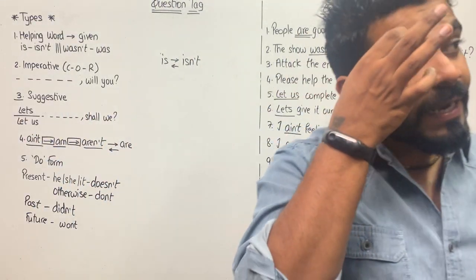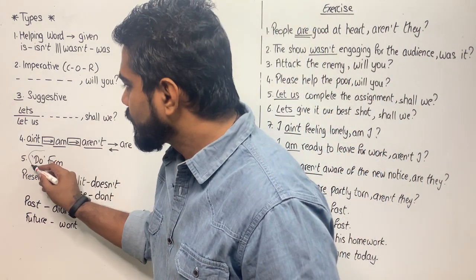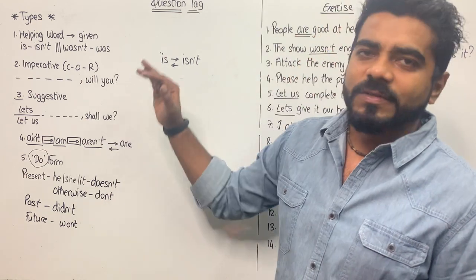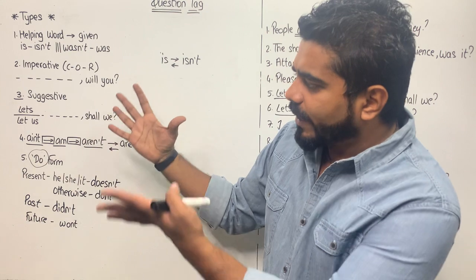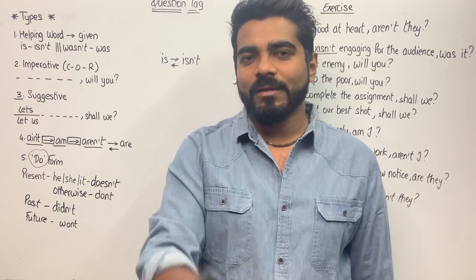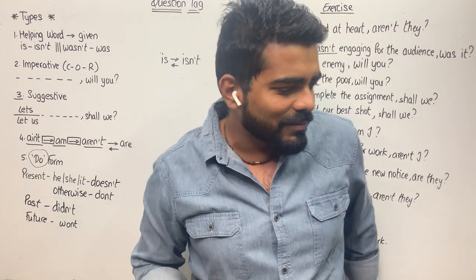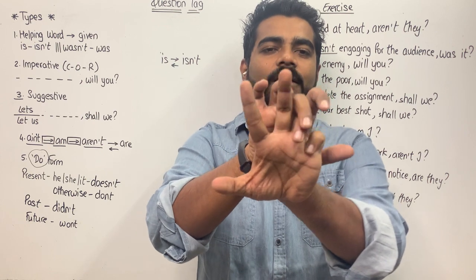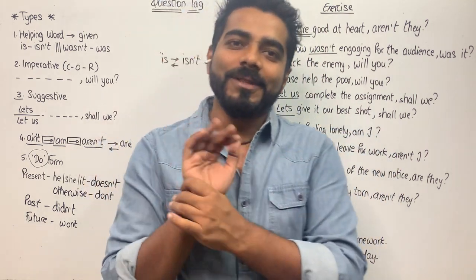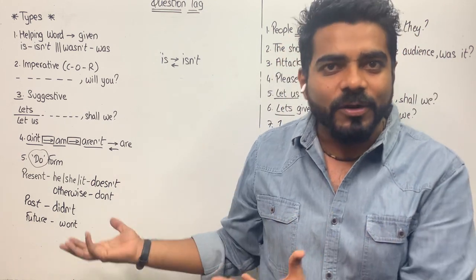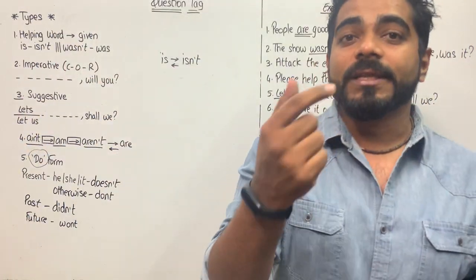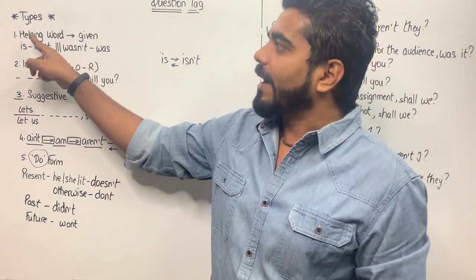Now the fifth type — that is, do form. When does a sentence land in the fifth type? When it does not come in the first four types, it comes in the fifth type. On a serious note: if the sentence does not have a helping word like is, was, could, would, should, are, etc., it is not imperative (not a command, order, or request), it does not begin with 'let's' or 'let us', and it does not have ain't, am, aren't, or are — then it is the fifth type: do form.